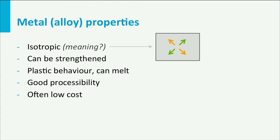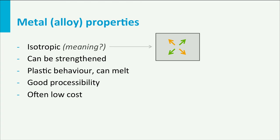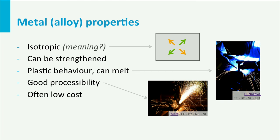Metals also show plastic behavior and they can melt. Both characteristics are important for manufacturing processes. For metals, processing in general is very good — not only forming and casting, but also machining and coating. And last but not least, metals are often cheap.